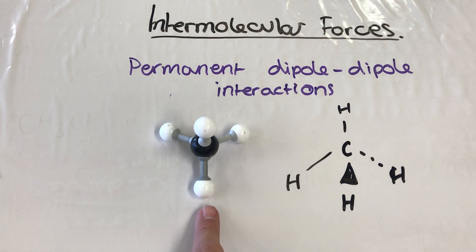So in methane, we're not going to have any permanent dipoles, so we don't have any permanent dipole-dipole interactions. All we will have is the induced dipole-dipole interactions, so we're going to have quite a low boiling point for our methane.